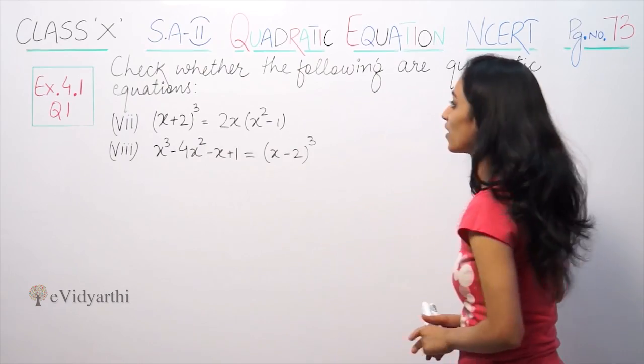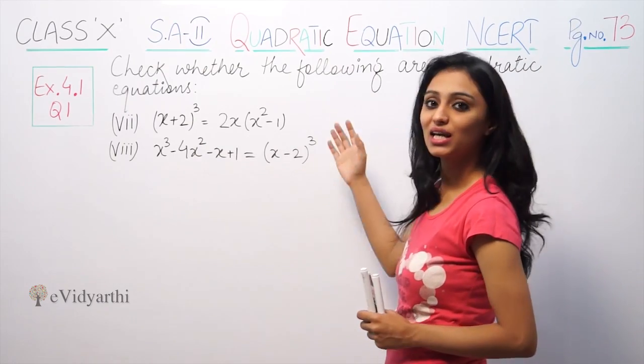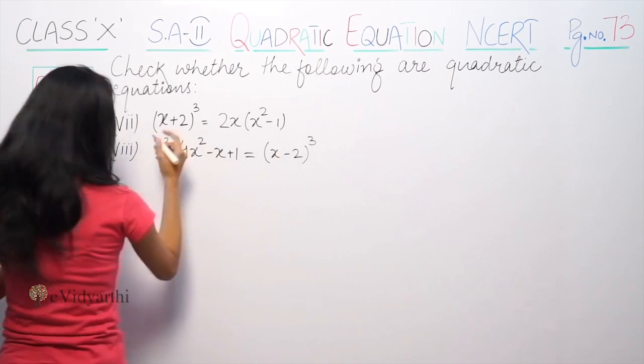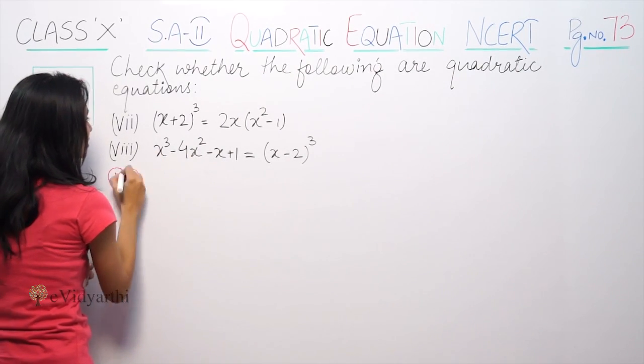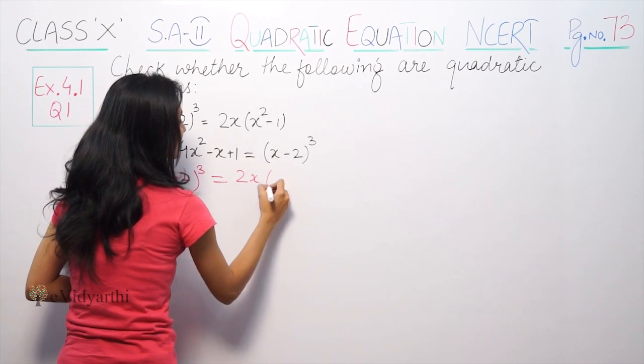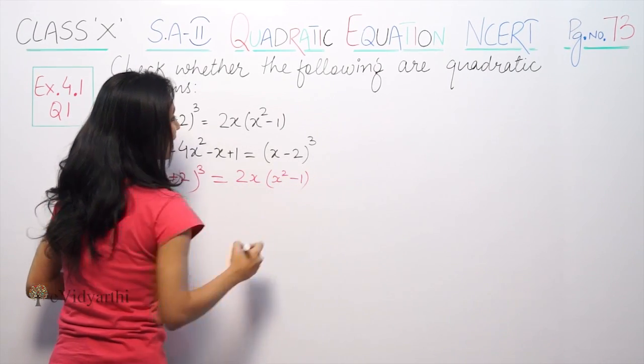Check whether the following are quadratic equations. So we have to check whether the equation is quadratic or not. So first of all, this is part number 7, which is (x+2)³ = 2x(x²-1).